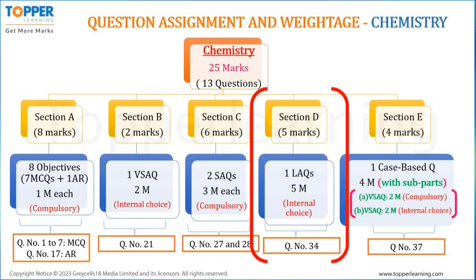In Section D, 5 marks are allotted to chemistry wherein you will be asked 1 long answer type question with internal choice. That means there will be 2 questions out of which you need to answer any one. Question number 34 is the chemistry question with internal choice.